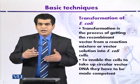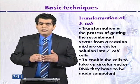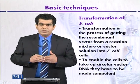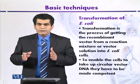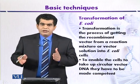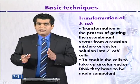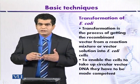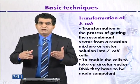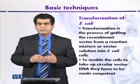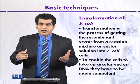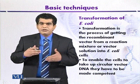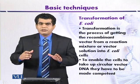Then in 1970, a few workers were able to transform E. coli in the presence of calcium chloride, using bacteriophage lambda DNA. After a few years, in 1972, Cohen and his colleagues were able to transform E. coli even with plasmid DNA. Plasmid DNA is the extra-chromosomal material of bacteria that can be used as a vector to insert foreign DNA.